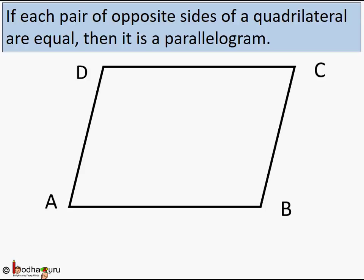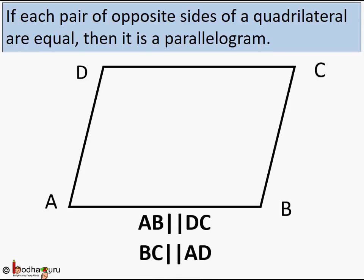Since opposite sides are parallel, ABCD is a parallelogram. So we can easily say: if each pair of opposite sides of a quadrilateral are equal, then it is a parallelogram. That's all for now, bye bye.